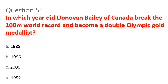Question 5. In which year did Donovan Bailey of Canada break the 100-meter world record and become a double Olympic gold medalist? A. 1988. B. 1996. C. 2000. D. 1992. Correct answer: B. 1996.